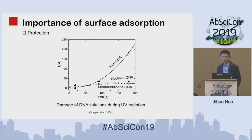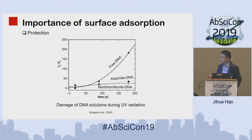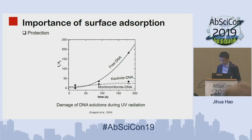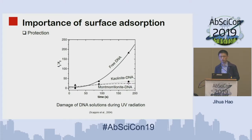The first importance is to protect biomolecules against the harsh environments on the early Earth or other planets. For example, this study shows the degradation of DNA without mineral and with mineral. You can see that the complexation between the clay mineral and DNA can help preserve the DNA against UV radiation damage. This is very relevant to the early Earth environment because there was no ozone and UV radiation would be very harsh for early life.